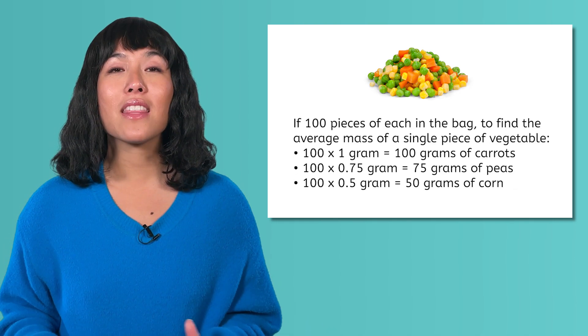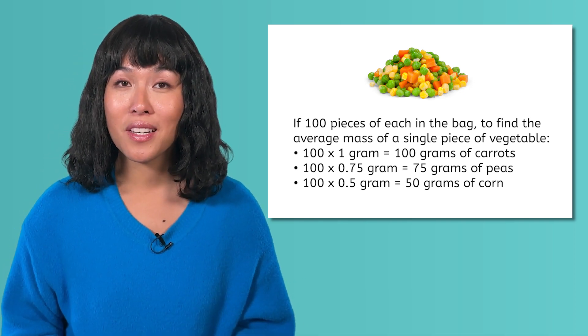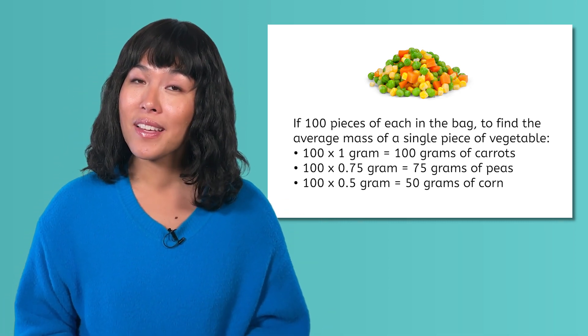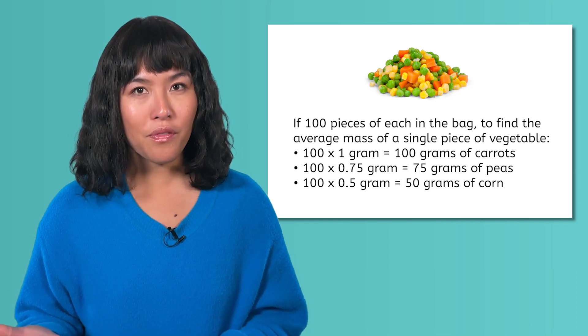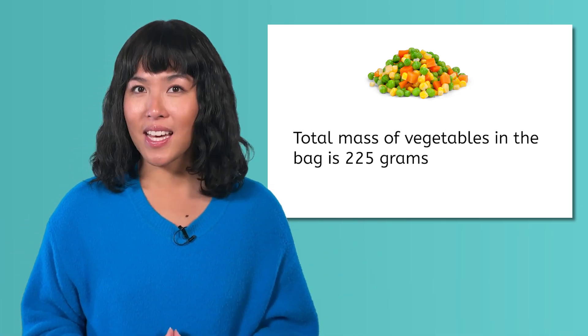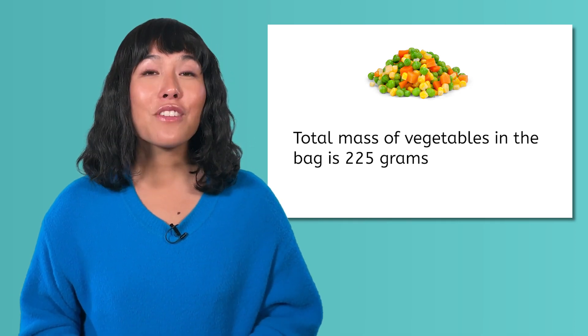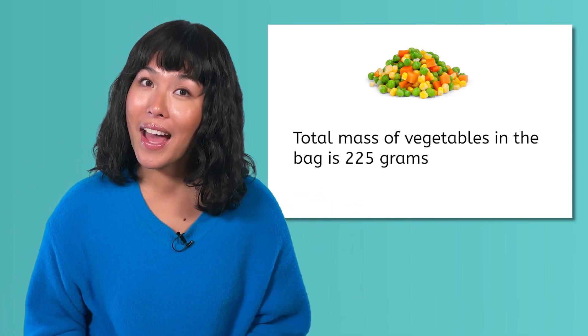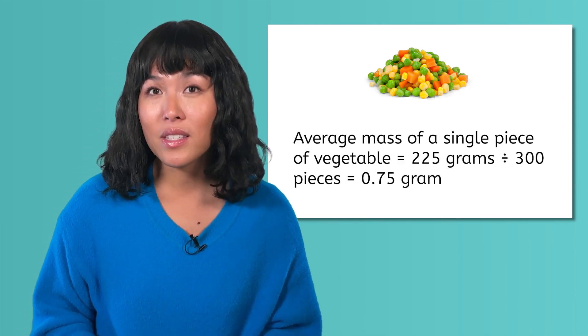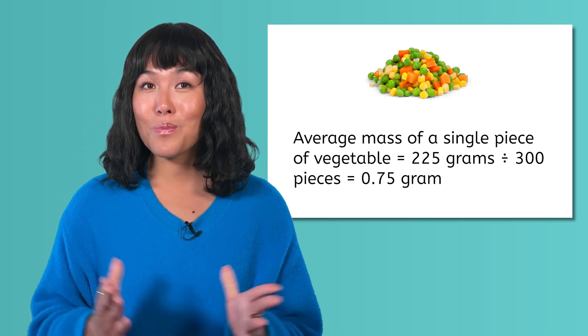To do this, you would multiply the mass of carrots, 1 gram, times 100 to get 100 grams. The mass of peas, 0.75 gram, times 100 to get 75 grams. And the mass of the corn, 0.5 gram, times 100 to get 50 grams. Then you add all three of these masses together, 100 plus 75 plus 50, to get 225, and divide by the total number of veggies in the bag, 300. 225 divided by 300 is equal to 0.75. So the average mass of a single piece of vegetable in the bag is 0.75 gram.